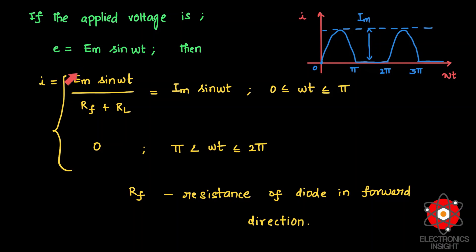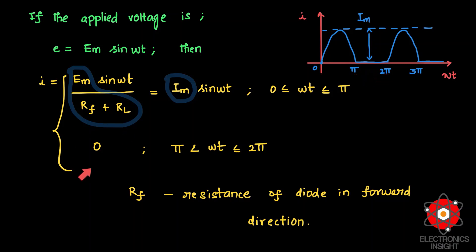So Im = Em / (RF + RL). The instantaneous current is i = Im·sin(ωt) for ωt from 0 to π, and i = 0 for ωt from π to 2π, because the diode does not conduct under reverse bias.